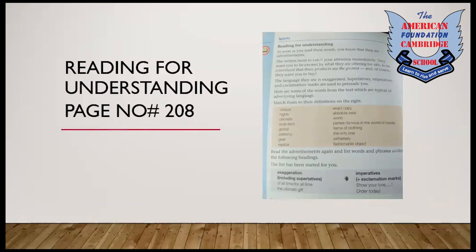Moving on — read the advertisements again and list the words and phrases under the following headings. The list has been started for you. For example, you have to list down words that use exaggeration. Exaggeration basically means to describe something very highly. Imperatives show an action towards something. Use these examples to continue and write down the phrases in their respective columns. I hope you find this lecture helpful for your attempt in the comprehension.